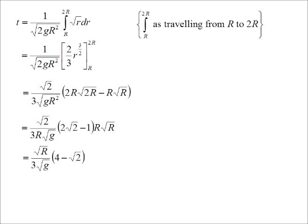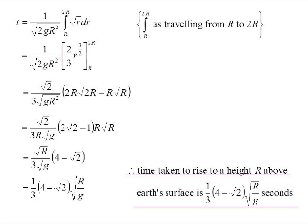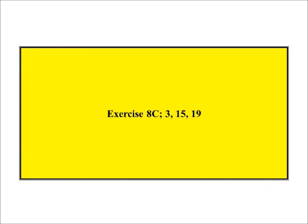And we're almost there with what we want. I'm now saying a third, 4 minus root 2 of root R over g. That is the answer we were looking for, for our question. You'll notice I've only put three questions there out of 8C.